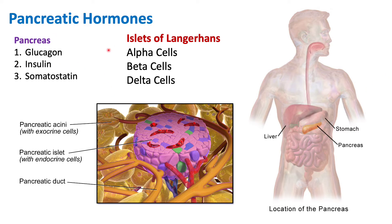When we talk about pancreatic hormones, we have three types: glucagon, insulin, and somatostatin. The pancreas is unique because it can act not only as an endocrine organ but also as an exocrine organ. Endocrine means releasing hormones into the blood, whereas exocrine means releasing a substance through a duct. The pancreas releases enzymes through ducts into the duodenum to help break down and digest food — that is the exocrine process.